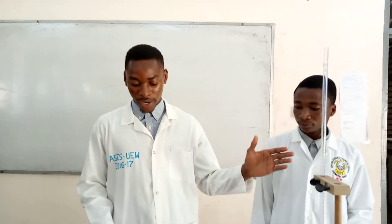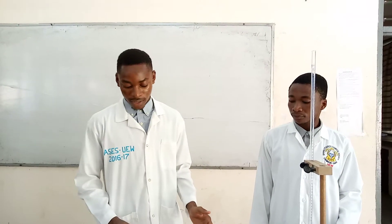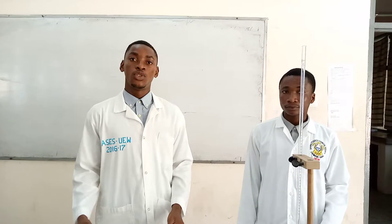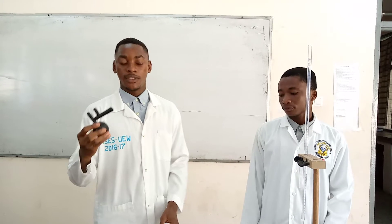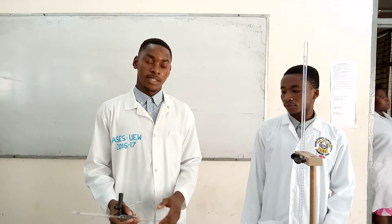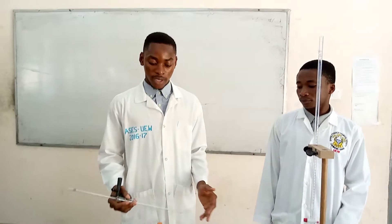So from here, we'll pour the acid, which is the nitric acid, into the burette. Then we'll pipette the base, which is the sodium carbonate, into the conical flask. And in so doing, we'll teach you how to use the pipette ball or pipette filler in pipetting the base into the conical flask.